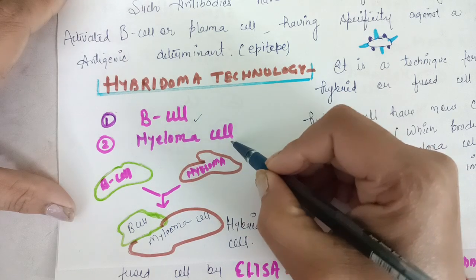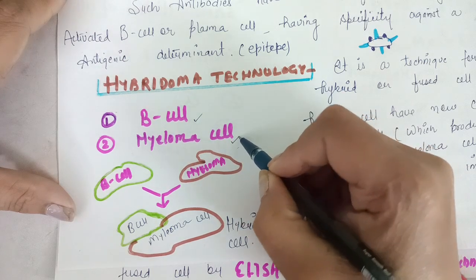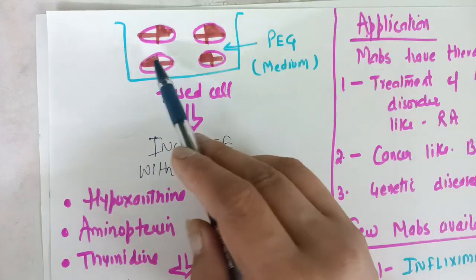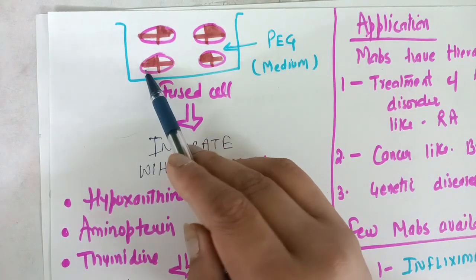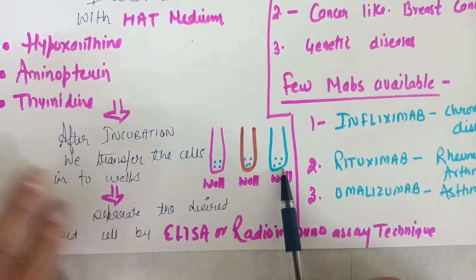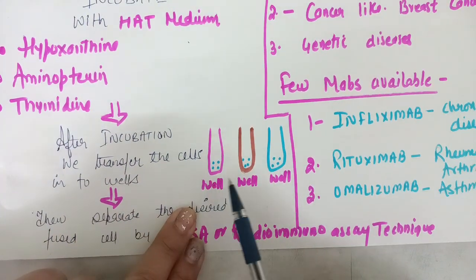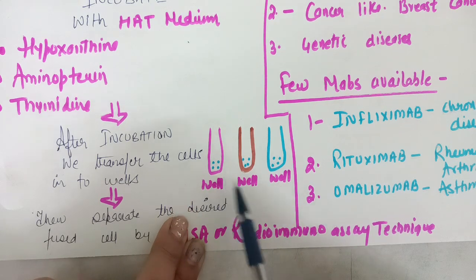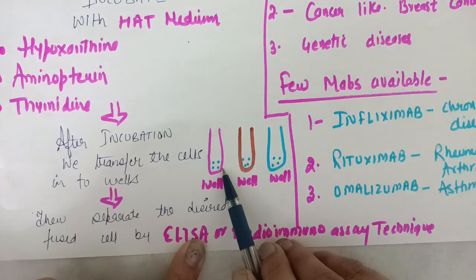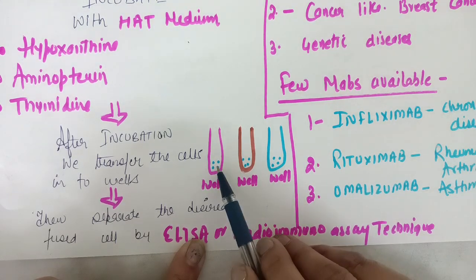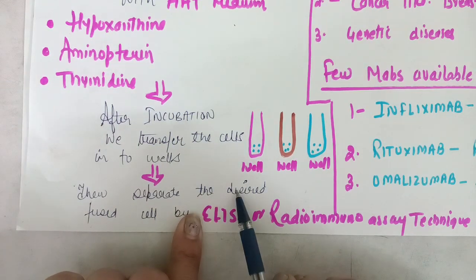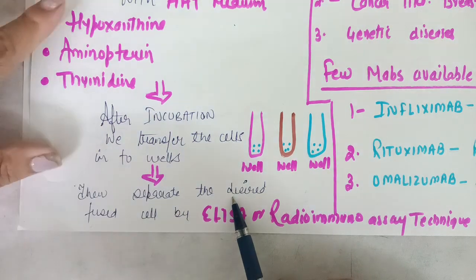Hello students, welcome back. We are going to talk about hybridoma technology. This video is helpful for students studying in the 6th semester biotechnology subject. We are covering the 3rd unit, and in this unit we have been assigned the topic of hybridoma technology. We will understand in detail what this technology is and what it can produce.